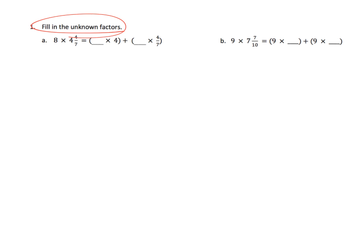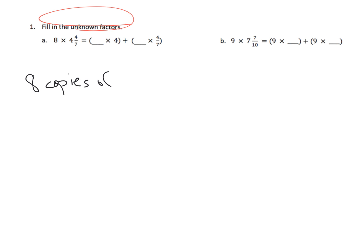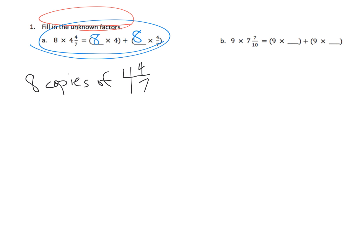The directions say fill in the unknown factors. We have eight times four and four-sevenths. Think of this as eight copies of four and four-sevenths. If you have eight copies of four and four-sevenths, that means you're going to have eight copies of four, and we're going to have eight copies of four-sevenths. So the eight goes right there — that is what they're looking for.